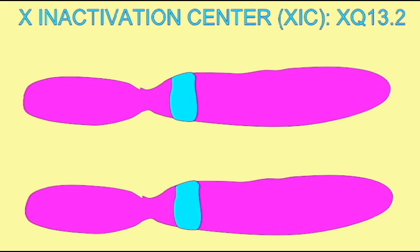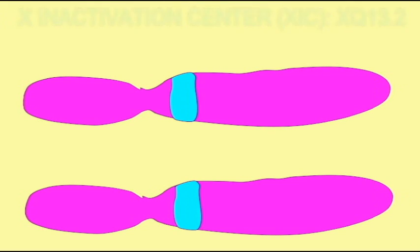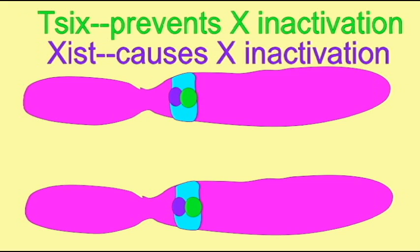Before X chromosome inactivation (XCI), Tsix is expressed on both X chromosomes. As long as Tsix is expressed, Xist is only expressed at very low levels on these chromosomes.